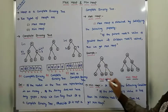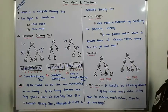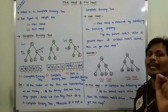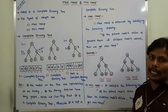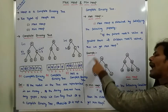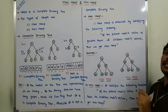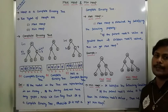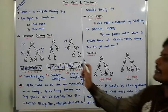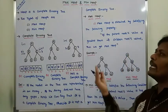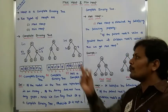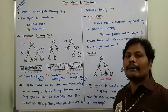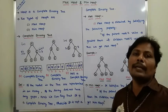So this is the example for maximum heap and this is the example for minimum heap. In the case of maximum heap, the parent node's value is greater than its children's values — that is the maximum heap property. For minimum heap property, the parent node's value is less than the children's node values. Before going to maximum heap and minimum heap, first we must understand the complete binary tree.